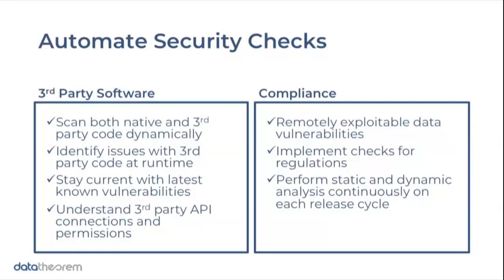As we really focus on compliance, are we doing checks that look for remotely exploitable data vulnerabilities? If something can be remotely vulnerable, we need to think about that upfront because that vulnerability will be the breach in which we see large data record loss. We need to implement checks for regulations — if we're doing things within our applications that would put us at risk for violation, we need visibility. Lastly, we need to perform static and dynamic analysis on a continuous basis for each release cycle. It's no longer enough to look at a one-time audit, because you may pass an audit today but have a breach tomorrow.